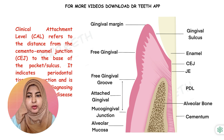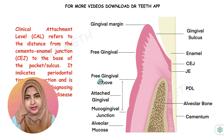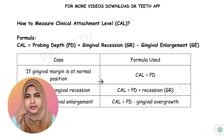It indicates periodontal tissue destruction and is crucial for diagnosing periodontal diseases. Let's see a few examples and understand how we measure the clinical attachment level.